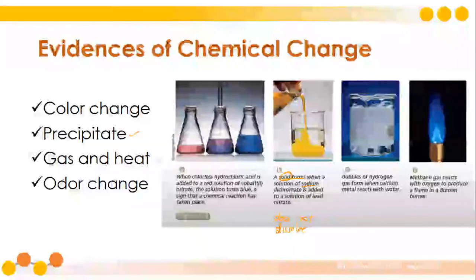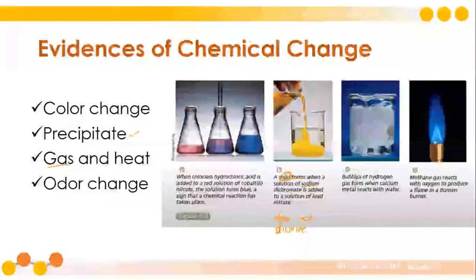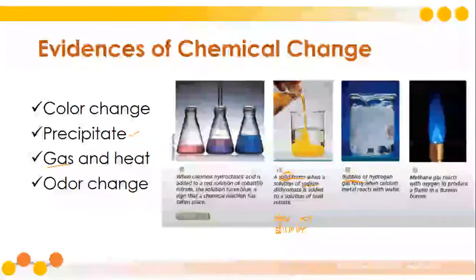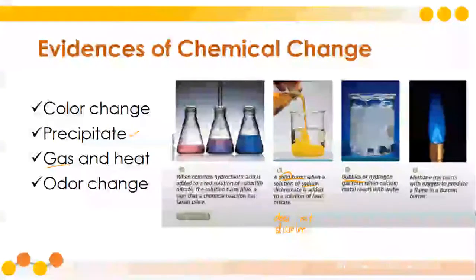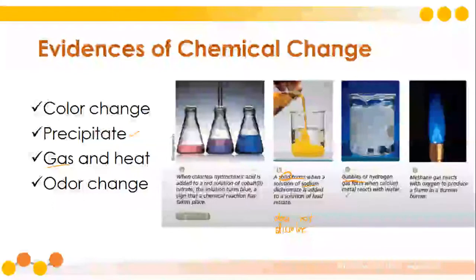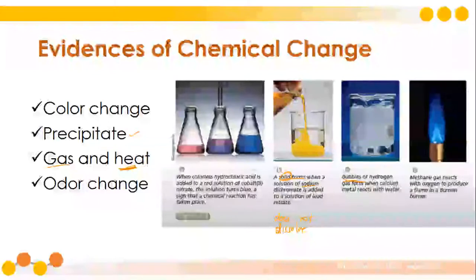Next is gas and heat. You can observe the formation of gas by observing the formation of bubbles in your experiment. Bubbles of hydrogen gas form when calcium metal reacts with water — the formation of bubbles indicates gas production. There is also heat: when there is an increase in temperature in the solution or in the chemicals you combine, then there is a chemical change.